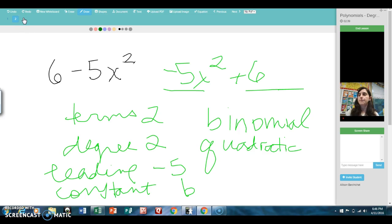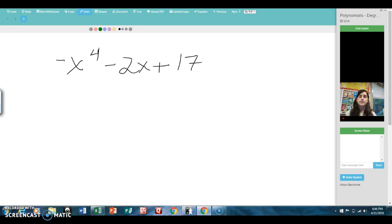We're going to do one more example. All right, so now we have three terms: one, two, three. So that means it is a trinomial.